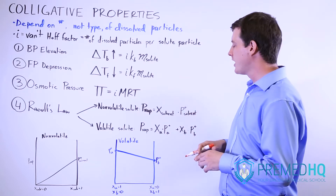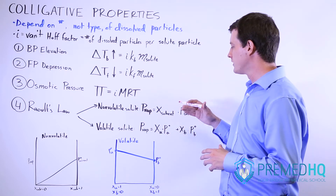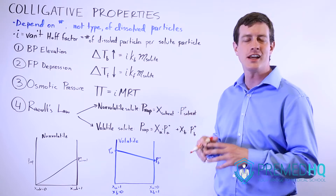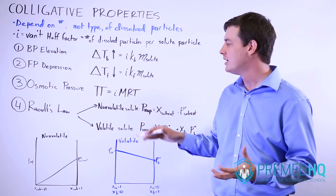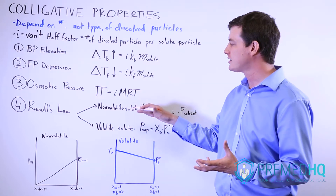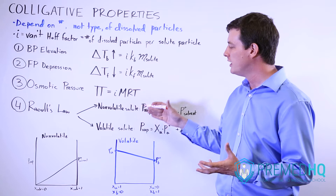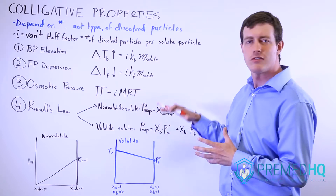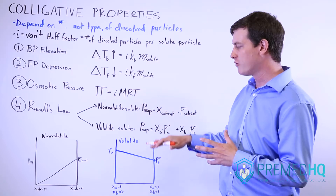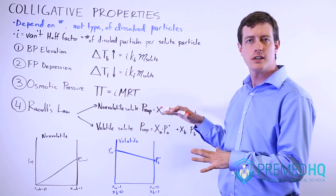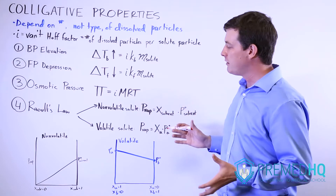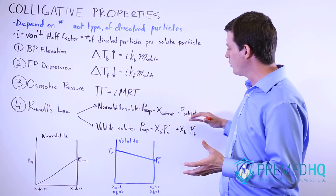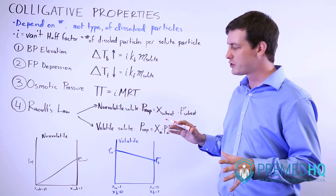For example, if we have a solution that is 90% solvent and 10% non-volatile solute, that would have the effect of reducing the vapor pressure over that solution by 10% from what it would be if it were pure solvent.